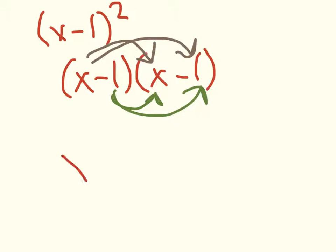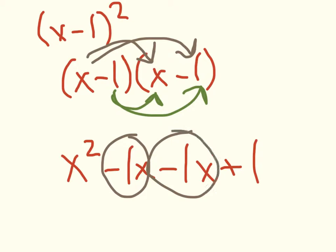x times x is x squared. x times negative 1 is negative 1x. Negative 1 times x is negative 1x. And negative 1 times negative 1 is a positive 1. Again, combine my like terms. And I come up with x squared minus 2x plus 1. So that is how you multiply two binomials using both methods.